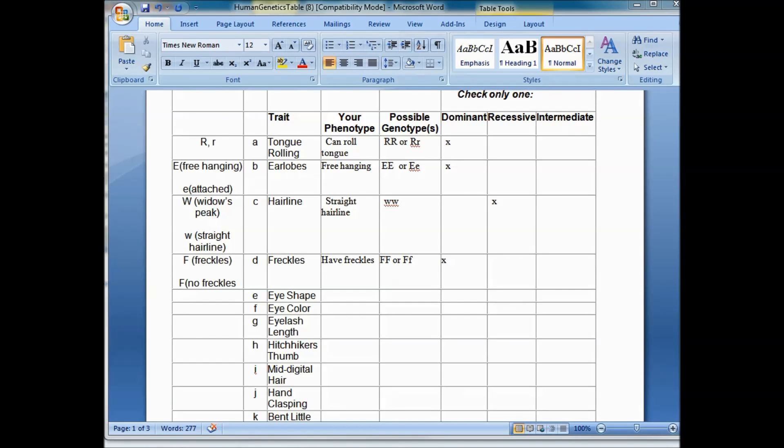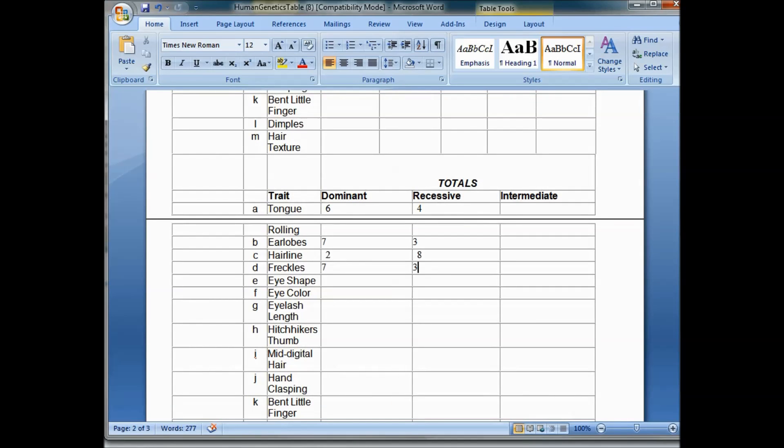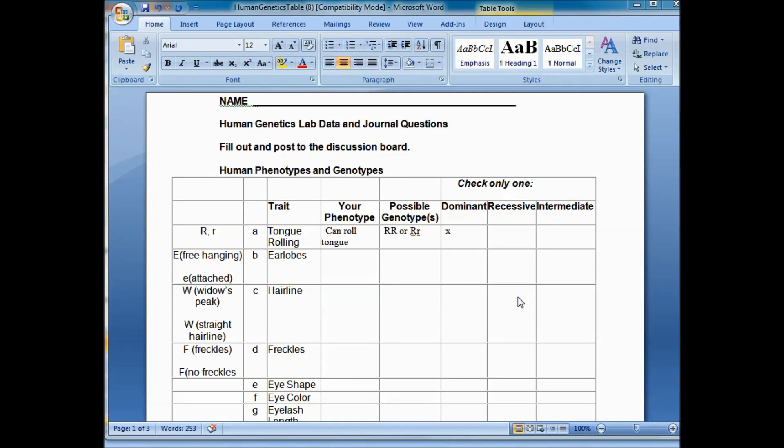Let's look at your human genetics lab. If you scroll down, you'll see that the first thing you're going to do is a prediction. What three traits would be most common among your classmates? Look at this list: tongue rolling, earlobes, hairline, freckles. So do you think your classmates have three top ones? You have to decide if the dominant or recessive trait is going to be more common in those three traits you predict. So you do a prediction first. Print off the instructions that have the pictures and the descriptions.